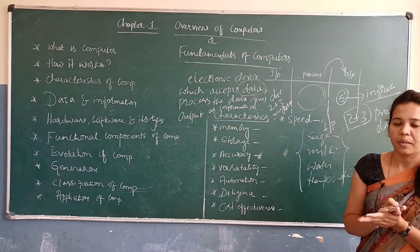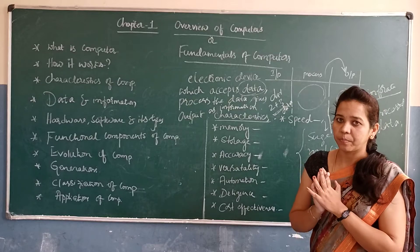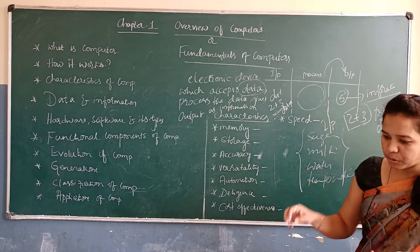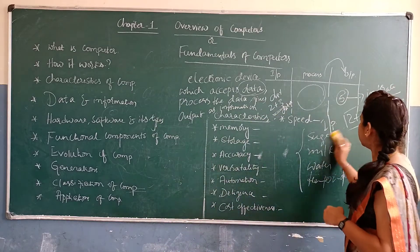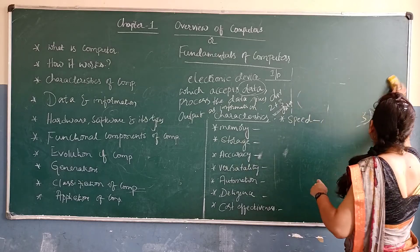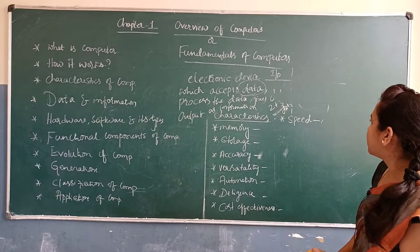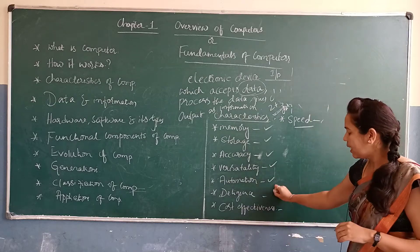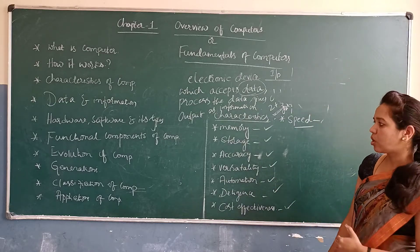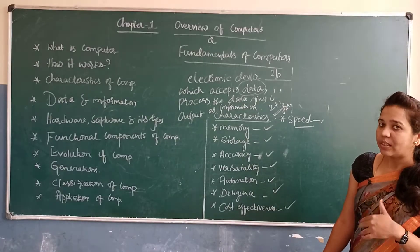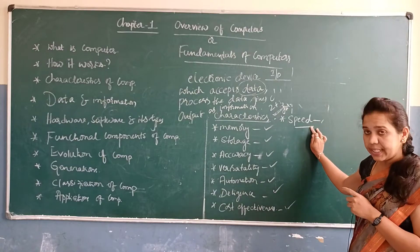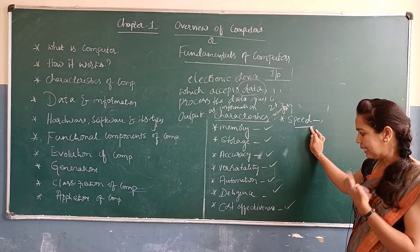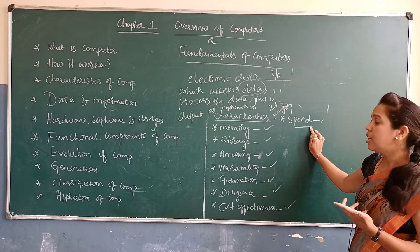Characteristics of computer. What are the characteristics of computer? The characteristics are: speed, memory, storage, accuracy, versatility, automation, diligence, and cost-effectiveness. Those are the characteristics of the computer.